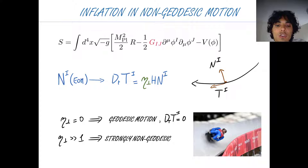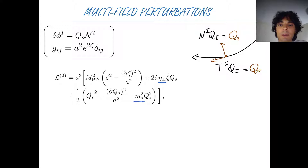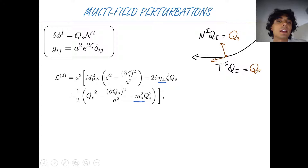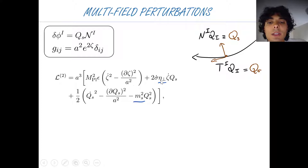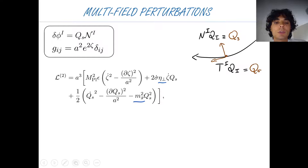If eta_perp is different from zero — and especially in the regime we're interested in, where it is much bigger than one — the motion will be strongly non-geodesic. The importance of eta_perp is even more relevant at the level of fluctuations. In a two-field model, the entropic fluctuation is the perturbation orthogonal to the background trajectory, while the curvature fluctuation plays the role of the adiabatic fluctuation. eta_perp couples these perturbations at the bilinear level and drives the exchange between these two modes, carrying information about multi-field dynamics.